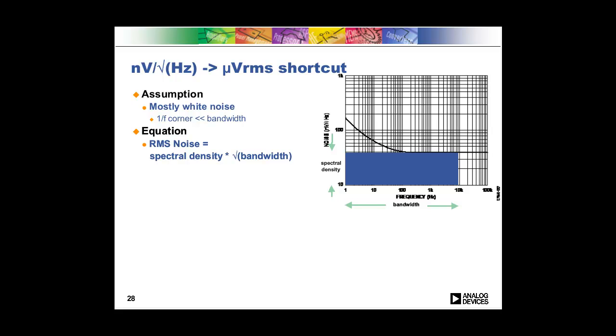So if you do that, then all you got to do is you just multiply the spectral density, which you can get from the data sheet table, or you can read from the graph here, and you multiply that by the square root of the bandwidth. And that's why it's always called nanovolts per root hertz, because you've got the square root. So just remember to take the square root of the bandwidth, multiply it by the spectral density, and there you go, you've got your RMS noise.